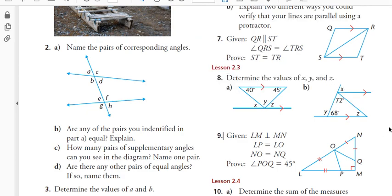For number eight: 40 equals X because the lines are parallel — alternate interior angles, so that's 40. Z is 45 because of alternate interior angles. So 40 plus 45 plus Y equals 180, and you can solve for Y. Also, this angle is 68, and you can figure out Z because the angles of a triangle equal 180. When you add that angle plus Z, that equals Y.